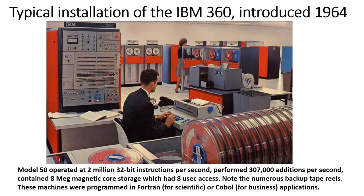A typical model might be the Model 50, which could operate at 2 million 32-bit instructions per second and perform 307,000 additions per second. It contained a magnetic core for holding data — comparable to today's RAM — with eight megs of core and eight microseconds of access time. The tape backup reels in the room were used to back up each day's data. These machines were programmed in FORTRAN for scientific operations or COBOL for business applications.